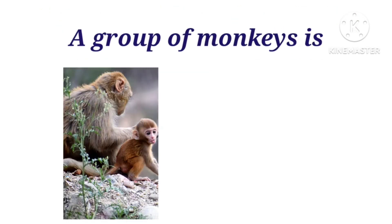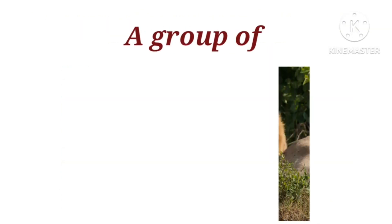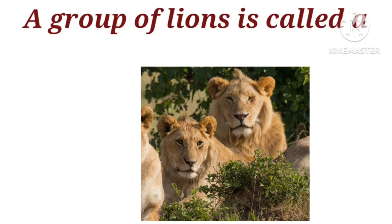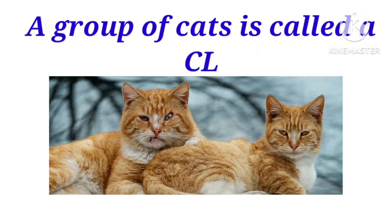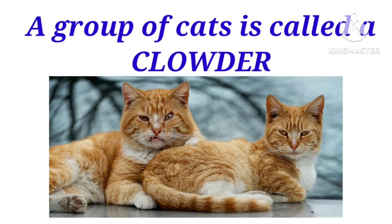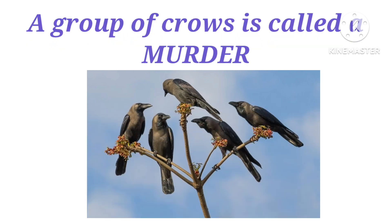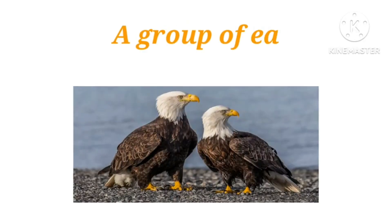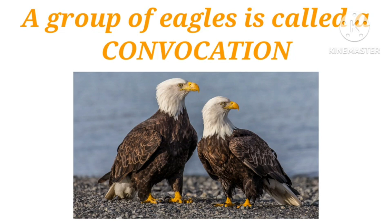A group of monkeys is called a barrel or troop. A group of lions is called a pride. A group of cats is called a cloud. A group of crows is called a murder. A group of eagles is called a convocation.